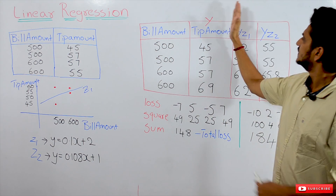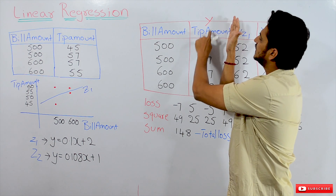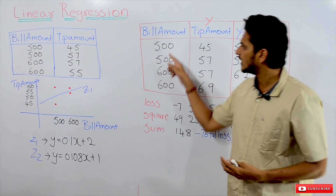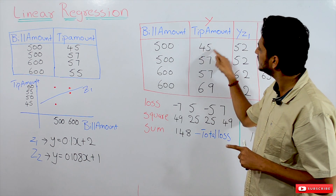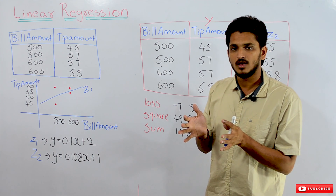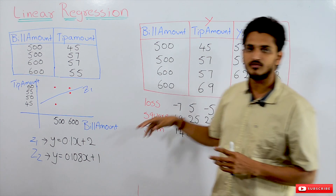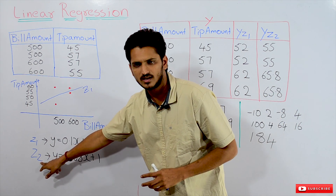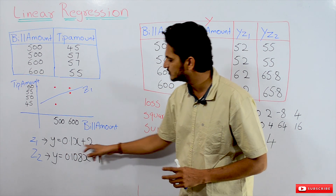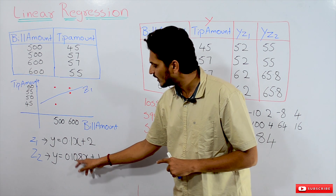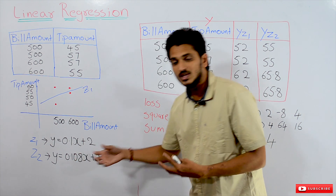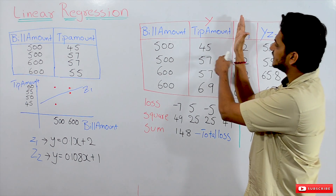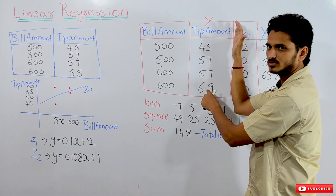Let's take an example. This is our collected data — bill amount and tip amount. The tip amount I am calling Y. These are actual data collected from real customers. One customer came into a restaurant, made a bill amount of 500, and gave a tip of 45. From this actual data, we identified two lines — Z1 and Z2 — to understand which one is the best line.